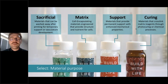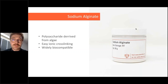I'll quickly go through popular choices for bioprinting vasculature. The first is sodium alginate — a simple polysaccharide derived from brown algae with a very easy ionic cross-linking mechanism. It has been shown to be widely biocompatible and is used both in vitro and for in vivo delivery of different cell types.